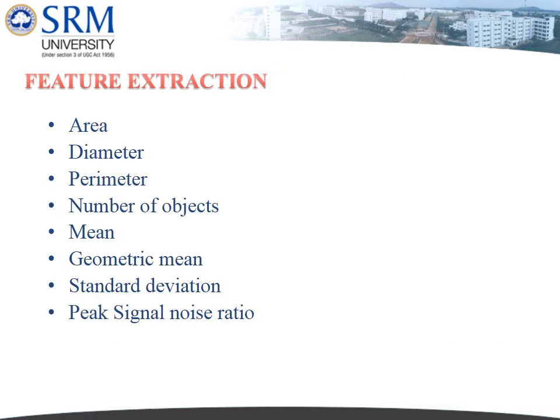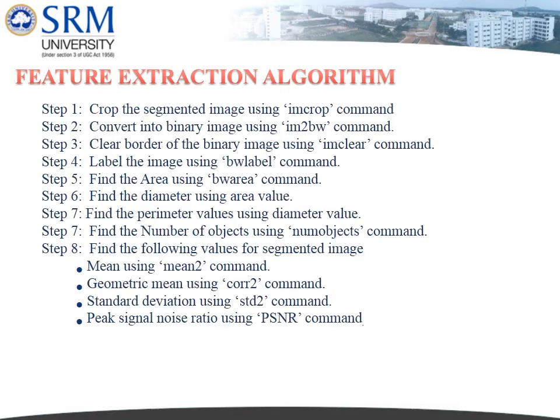For feature extraction, the following features are computed: area, diameter, perimeter, number of objects, mean, geometric mean, standard deviation, and peak signal-to-noise ratio. The feature extraction algorithm begins by cropping the segmented image using the imcrop command.